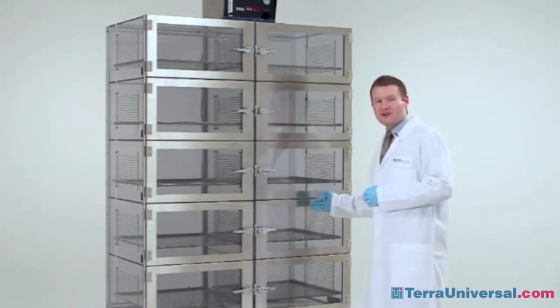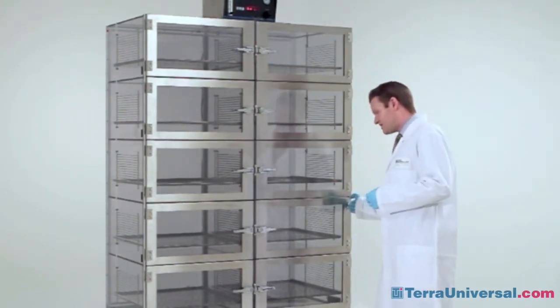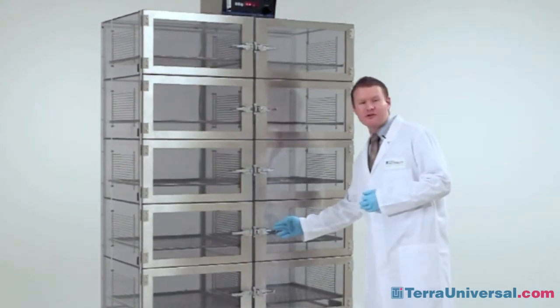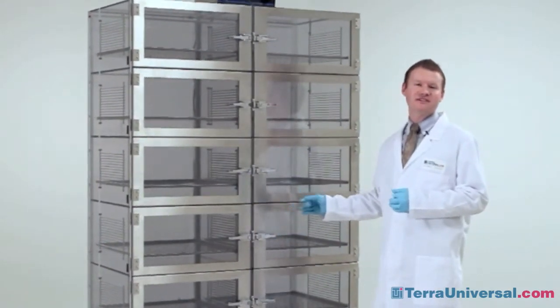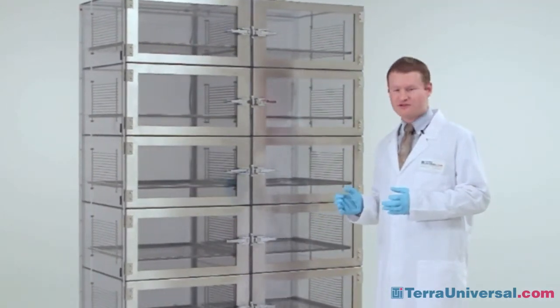Terra Universal's door frames, door hinges, and door latches are all composed of 304 grade stainless steel rather than the industry standard chrome plated steel, which is prone to corrosion.